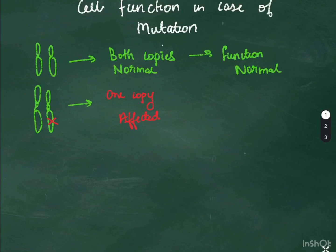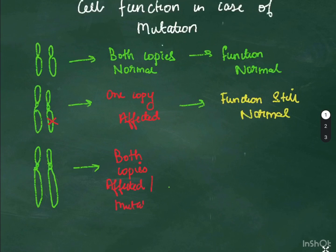But when both the copies are affected, as you can see here in this case, the cell function will also be abnormal. This forms the basis of the two-hit hypothesis which we are going to see later.